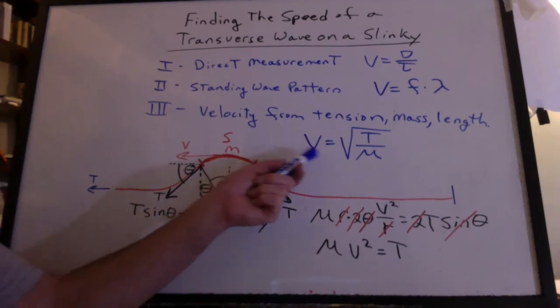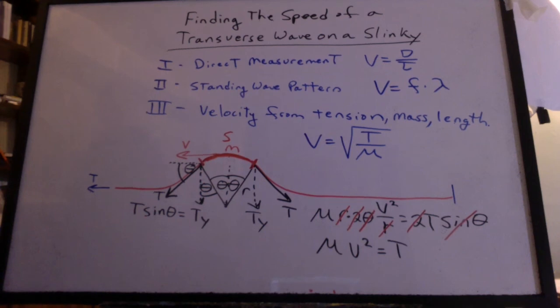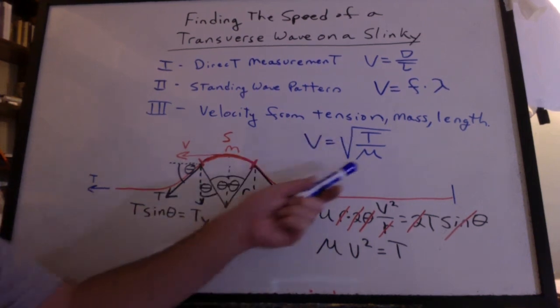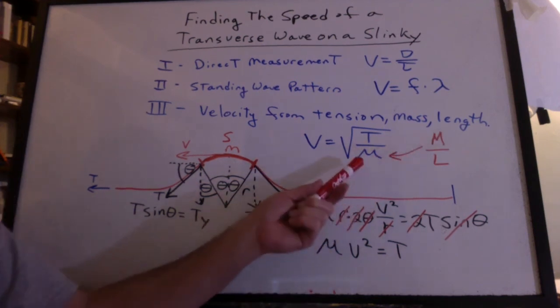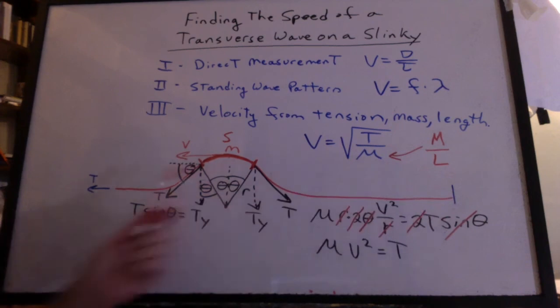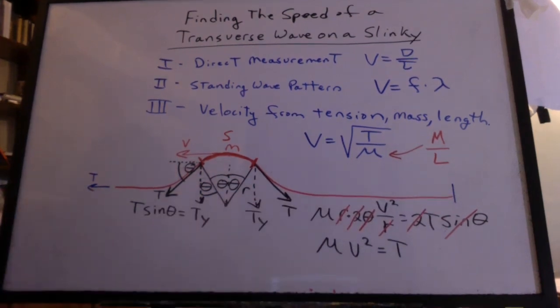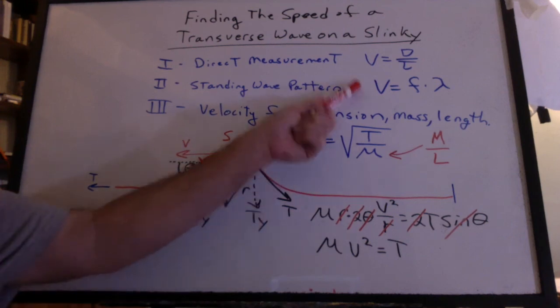Solving for V, we have the square root of the tension divided by the linear mass density. The tension, remember, was found from the spring scale. The linear mass density, get the mass of the slinky that was on the digital balance and divide by the length of the stretched slinky. That's in the video. So we should be able to test this and see if this number works out to be anything like these.